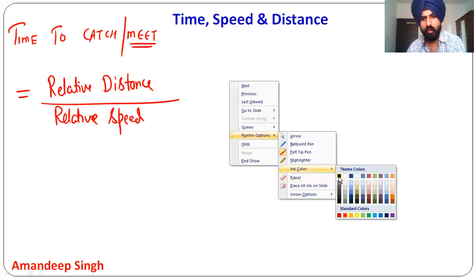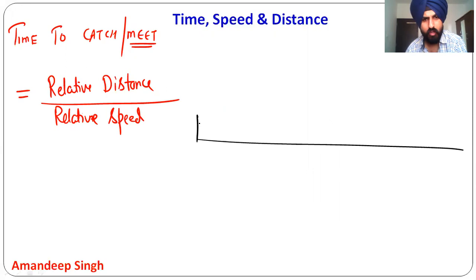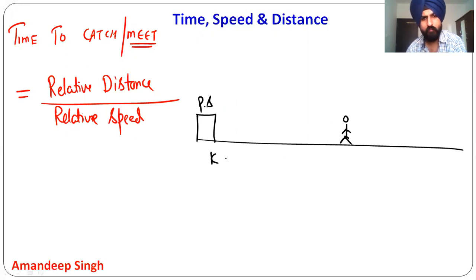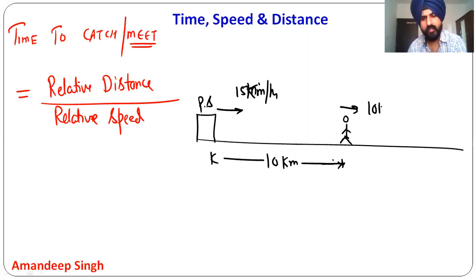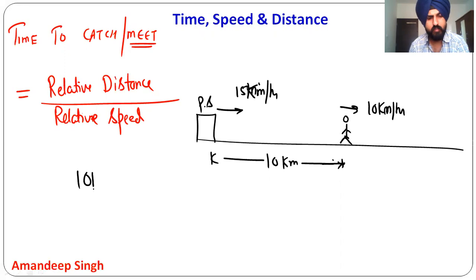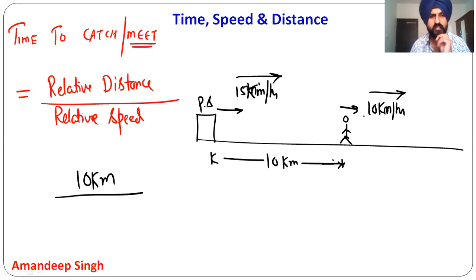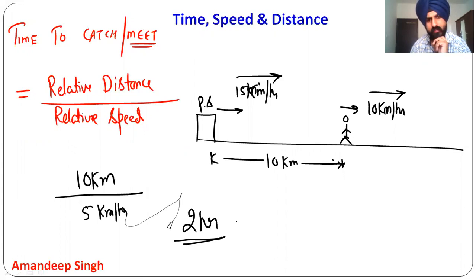Let's take an example. Suppose a thief escapes from a house and has a head start of 10 kilometers. The police speed is 15 km per hour and the thief's speed is 10 km per hour. How much time will it take for the police to catch the thief? Since both are going in the same direction, relative speed is 15 minus 10 = 5 km per hour. Time = 10 divided by 5 = 2 hours.